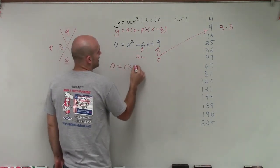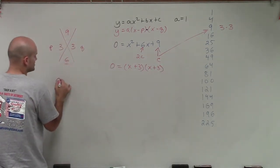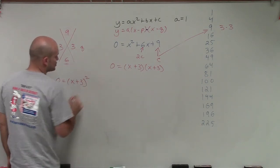So therefore, I'll have x plus 3 times x plus 3. Now, there's another way you could also write this: you could also write this as x plus 3 squared.